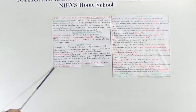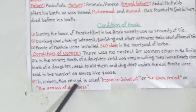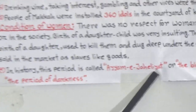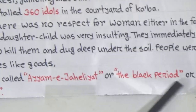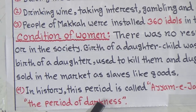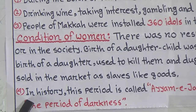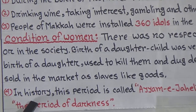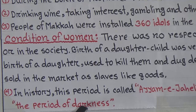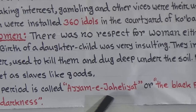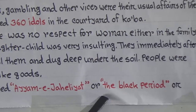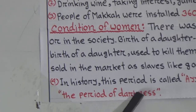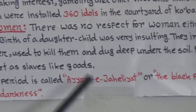Number four: in history this period is called Ayyam-e-Jahiliyyah, or the black period, or the period of darkness. My beloved students, this sentence is very important. Among all, this is more important — what was the condition of the Arabs: this period was called Ayyam-e-Jahiliyyah, or the black period, or the period of darkness. You have to remember all these names.